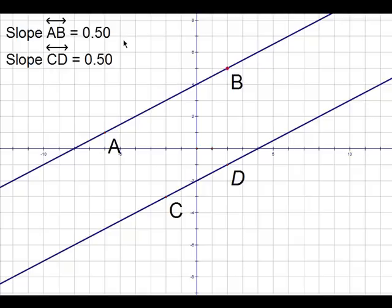I've asked Geometry Sketchpad to find the slope of both of the lines, and as you can see, the slope of line AB is 0.5, the slope of line CD is also 0.5.